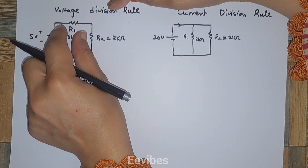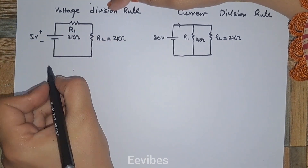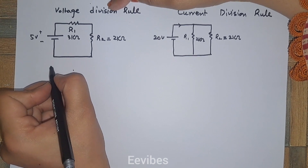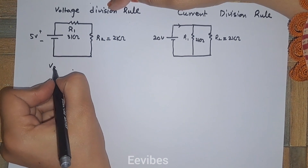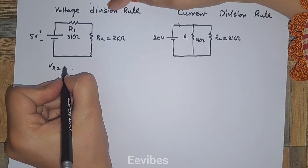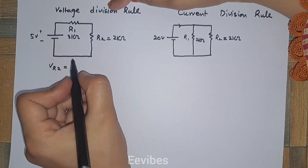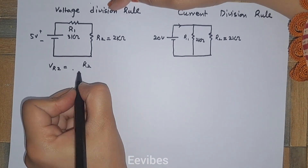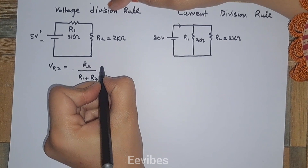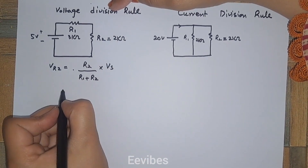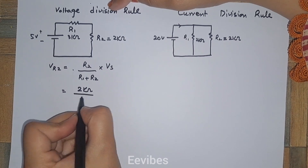In other words, the voltage will be divided across R1 and R2. According to the voltage division rule, we can find the voltage across the other resistor VR2 by using the formula: VR2 is equal to R2 divided by R1 plus R2, multiplied by VS. Substituting values: 2 kilo-ohms...